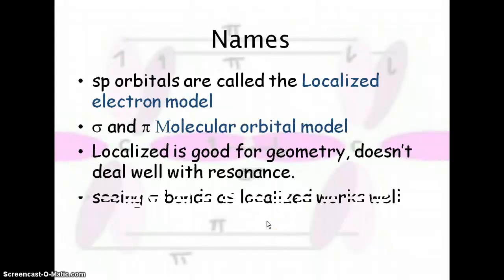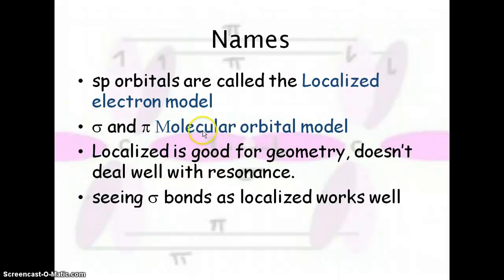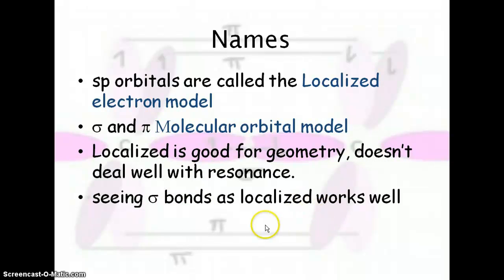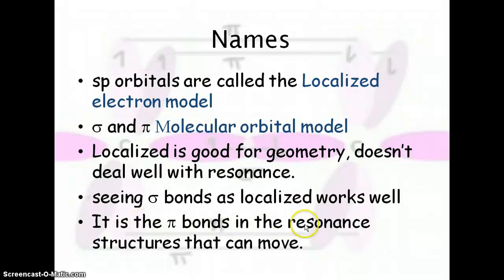When we're talking about s, p, d, and f, we're talking about the localized electron model. Sigma and pi bonding and any hybridization is going to be the molecular orbital model. The localized model is good for geometry but doesn't work well with resonance. Sigma bonds as localized works well — it's the pi bond and the resonance structures that can move. Now we're going to look at hybridization in resonance structures.